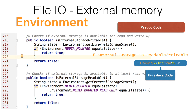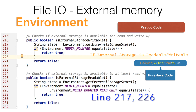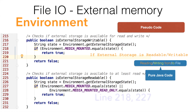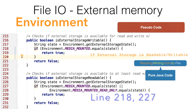You can see from the code that what I am doing here is getting the state of the external storage through Environment.getExternalStorageState and checking whether the media is mounted. In case it is mounted, that means I can write to that particular external storage. And in the case of isExternalStorageReadable,